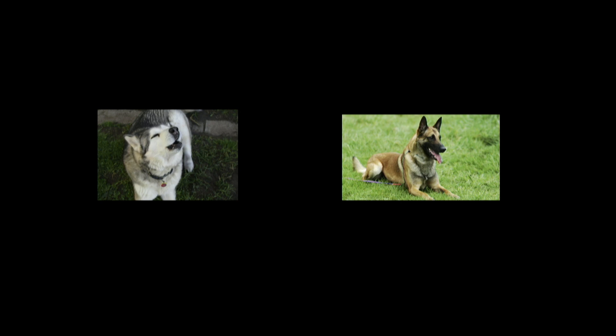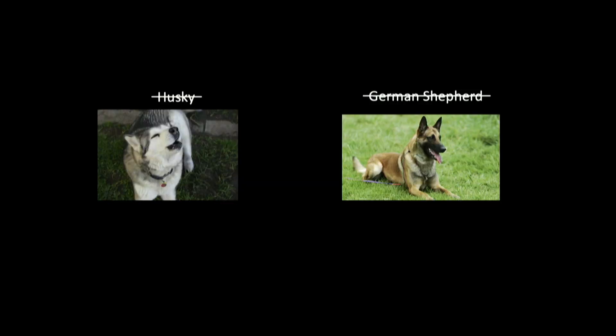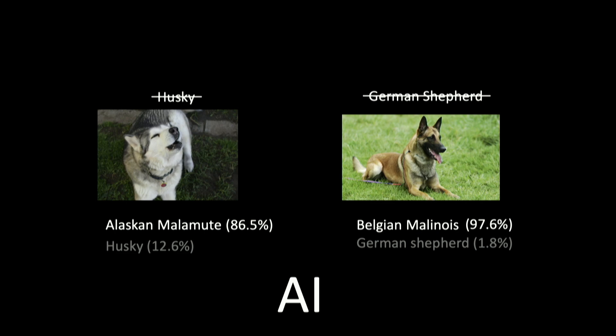Let's take a look at these images here. Nothing remarkable — just a picture of a husky and a German Shepherd. But what if I told you that there is neither a husky nor a German Shepherd on the screen? That's because it's actually an Alaskan Malamute and a Belgian Malinois. It maybe takes an expert dog breed reader to tell the subtle differences apart. But it gets interesting when an artificial intelligence system can actually distinguish all of these different dog breeds with very high accuracy. Quite remarkable.